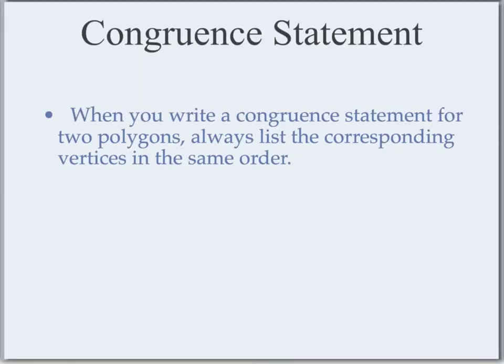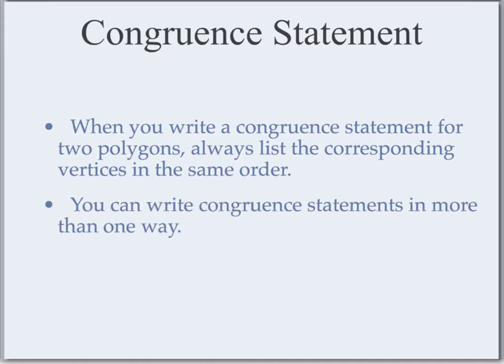So let's write a congruent statement — a statement that says that one figure is congruent to the other. When you write a congruent statement for two polygons, you always list the corresponding vertices in the same order. You can write congruent statements in more than one way — you can pick letters in a different order — but the corresponding vertices have to be in the same order.